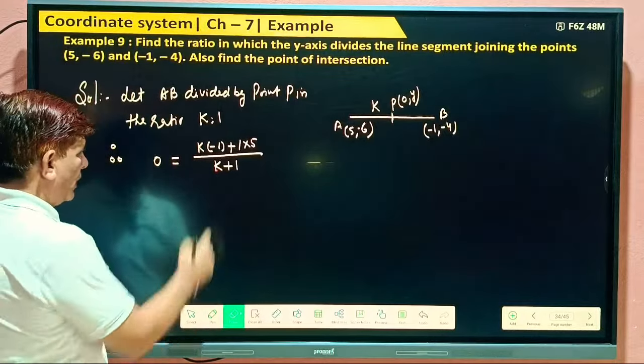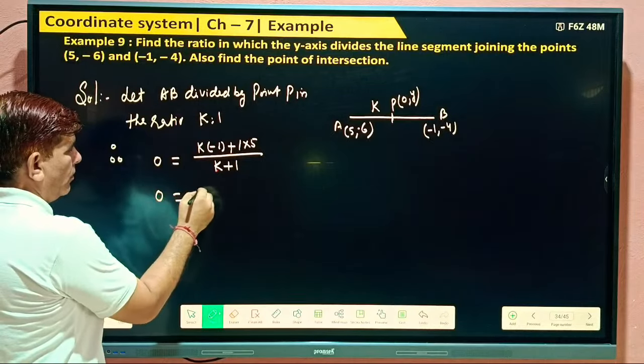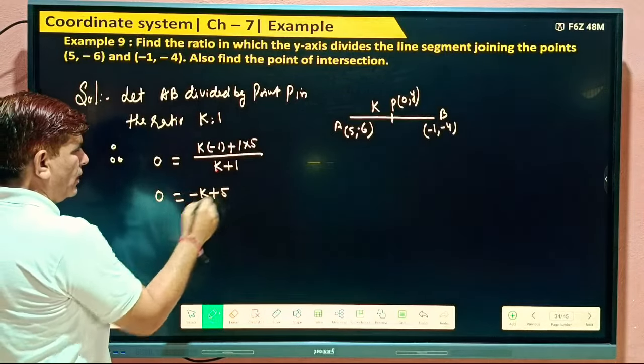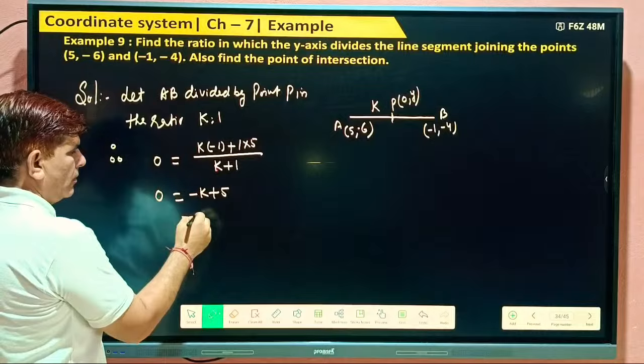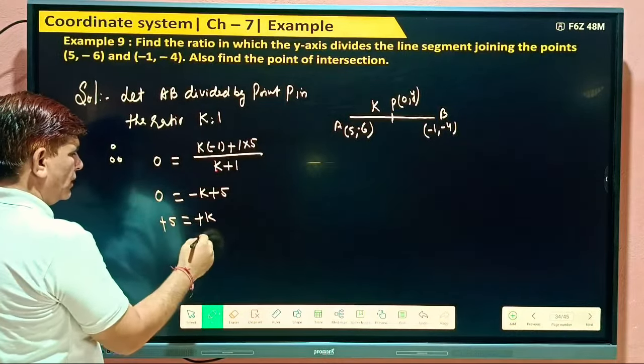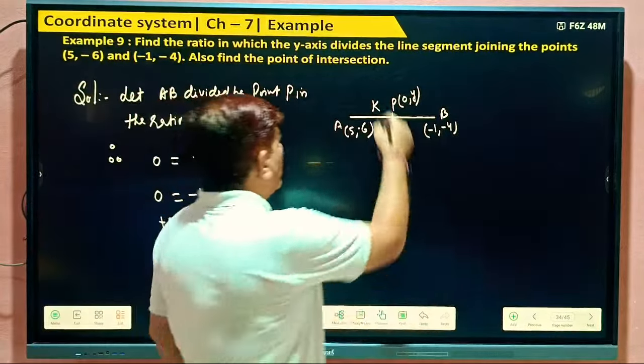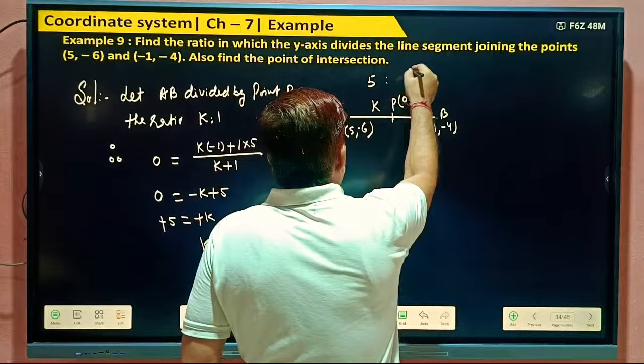So if we can solve 0, 0 equal to minus K plus 5. So what's this? Minus K equal to minus 5. Minus K equal to 5. So in which ratio? 5 raised to 1.